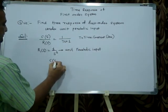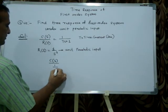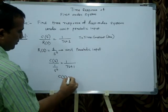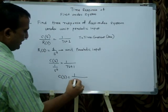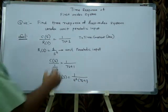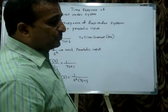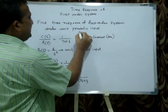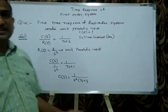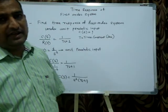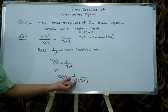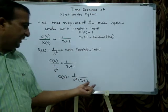Now I will substitute R(s) = 1/s³ into the transfer function. C(s) equals 1 divided by s³(Ts+1). This is C(s). But I am supposed to find the time response, which means c(t). To convert C(s) into c(t), I have to take the Laplace inverse. But before taking the Laplace inverse, these are multiplication factors s³ and Ts+1.